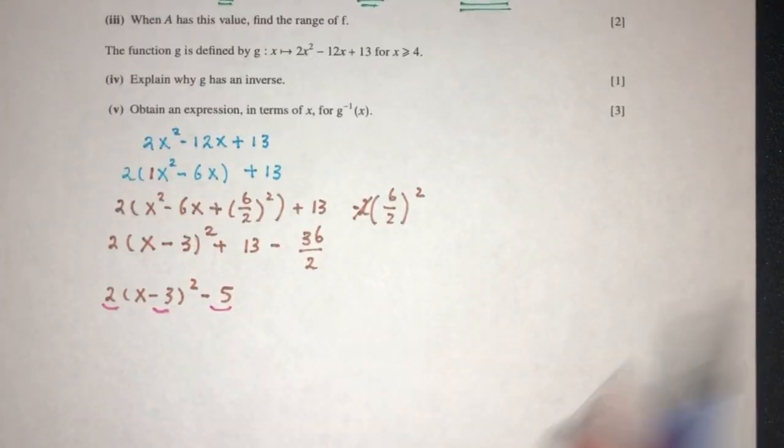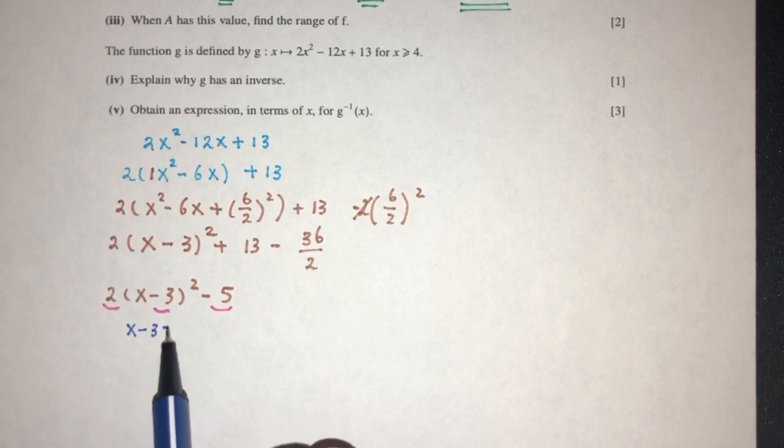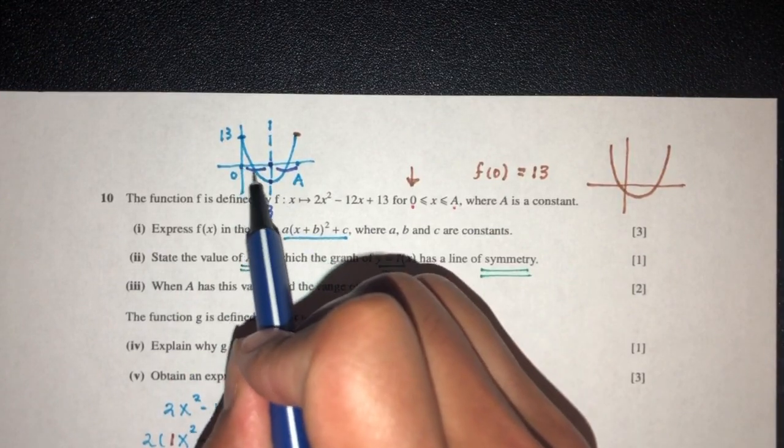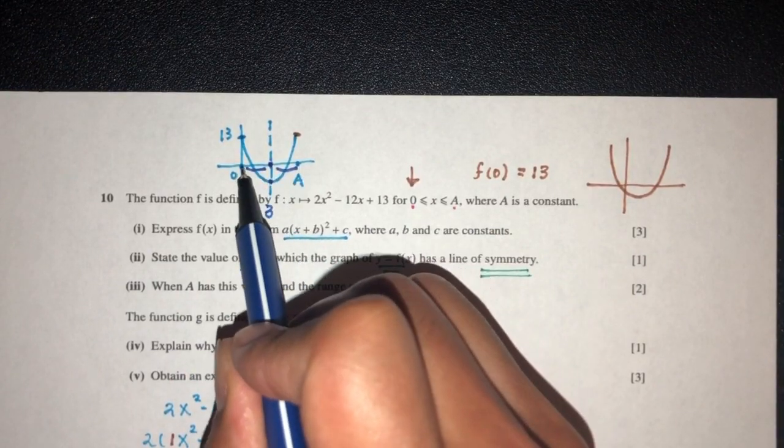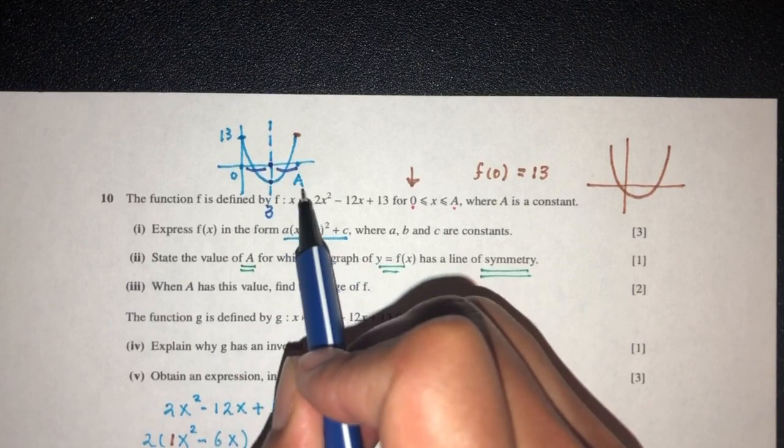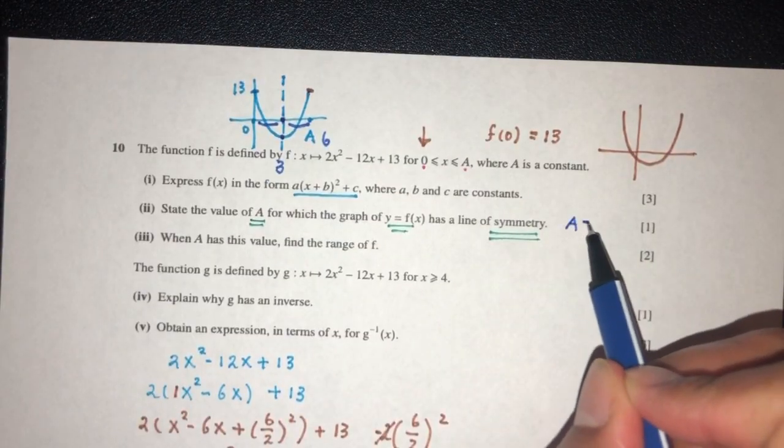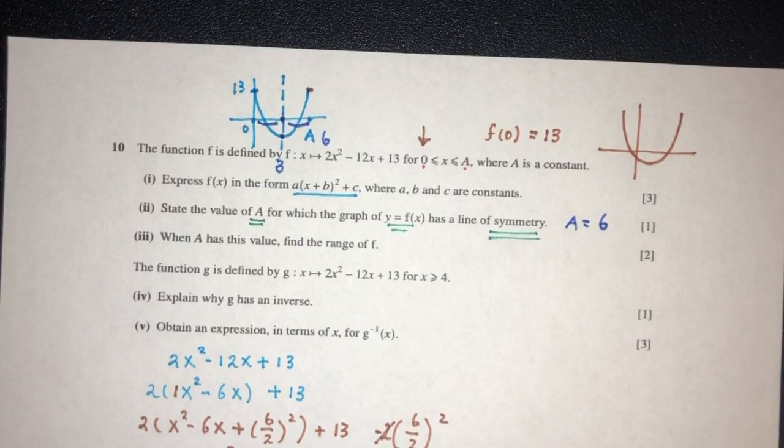And by observing this equation, that value is when x minus 3 have to be 0. x will be 3. So the value here will be 3. This is 3, this also have to be 3. So 3 plus 3, that should be 6. So the value of a will be 6, for which you will have a line of symmetry. I hope that makes sense.